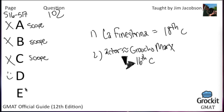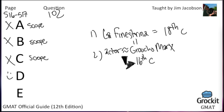Choice E says the director must have advised the actor to model his performance on Groucho Marx. He or she may have, but we don't have evidence from the passage to support that. We do have evidence for a connection between the original cultural context of the play and the cultural context of a Groucho Marx-like performance. So E is not it. Choice D is correct for number 102.